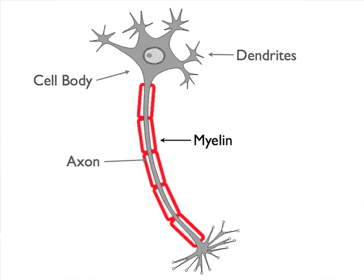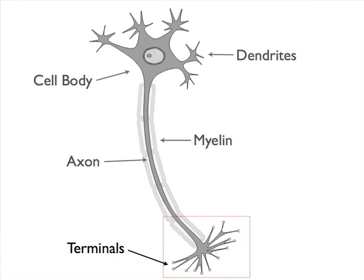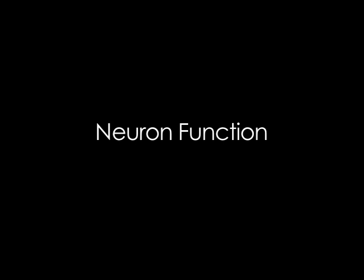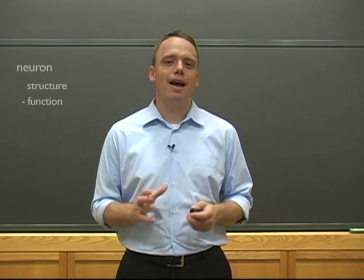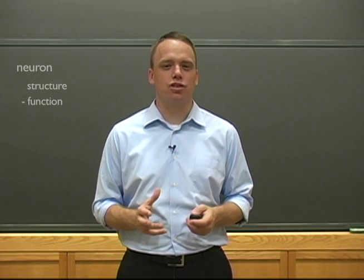The final part that's important to consider are terminals. These exist at the very end of those axon branches, and they house neurotransmitters, which are the chemical signals used to communicate between neurons. Okay, so now we have a basic sense for the structure of neurons.